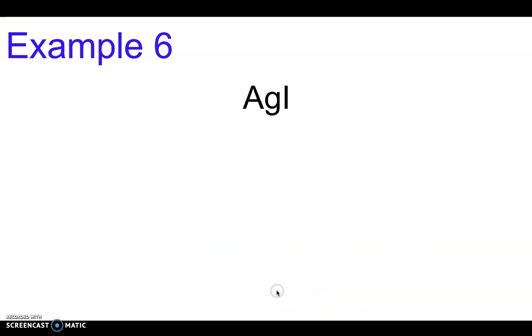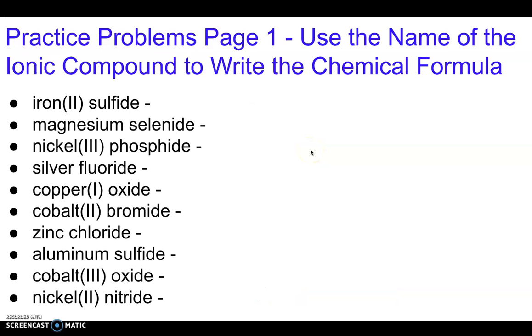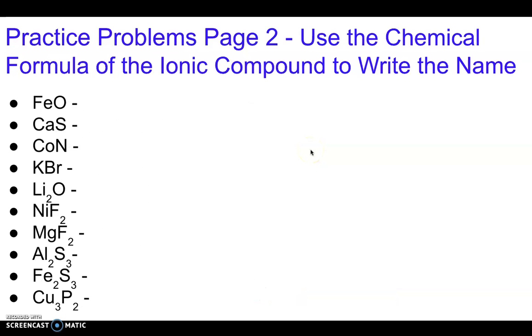Okay, last example. AgI, silver iodide. Remember silver doesn't have multiple oxidation states, so even though it's a transition metal, it's one of those ones that's always +1. So we don't have to write silver(I), the answer is just silver iodide. Okay, go ahead and try the practice problems, and if you have any questions let me know.